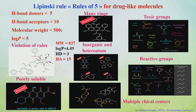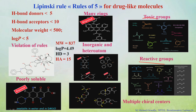In this case the compound violated two aspects, so it may not be a drug-like molecule. Another compound is rejected because it is insoluble in water — solubility is important because if it is not soluble, it cannot be administered. Other rejection reasons include having too many rings, inappropriate inorganic atoms or heteroatoms, toxic groups, reactive groups, and multiple chiral centers. These are various aspects by which we reject molecules that may not be viable drug candidates.